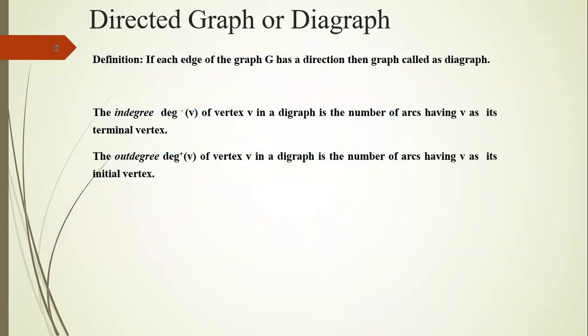In graph theory, we have already seen simple graph. Simple graph means without any directions — that is called a simple graph. Here, directed graph means each edge of a graph G has a direction. Then the graph is called a directed graph, or digraph.